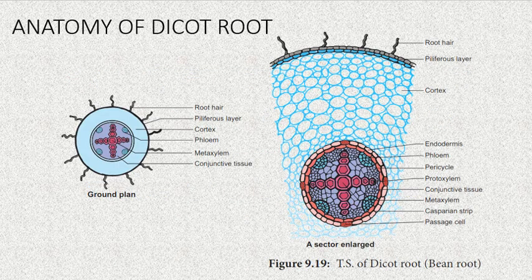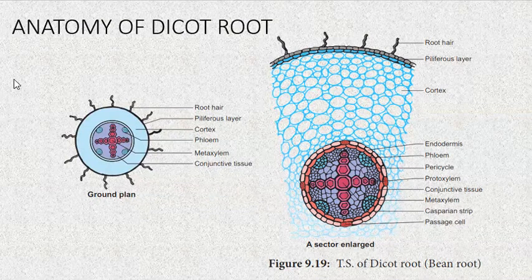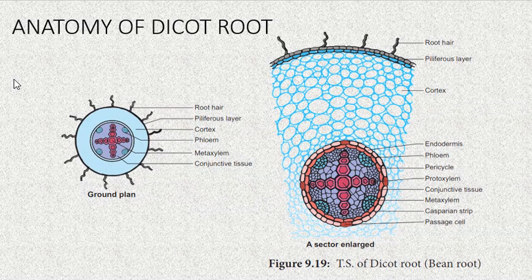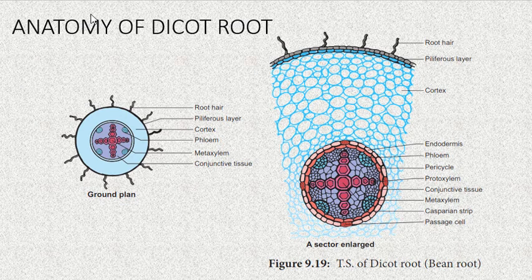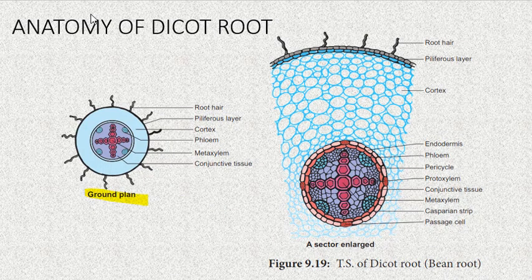Now, this is a root. We call this as ground plan — when I have a cellular structure, I will make a rough sketch to find what I am going to find in it. That we call ground plan.